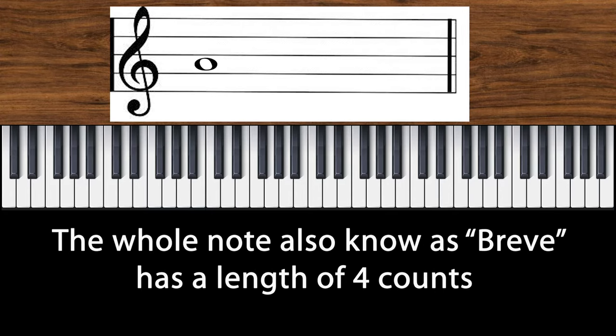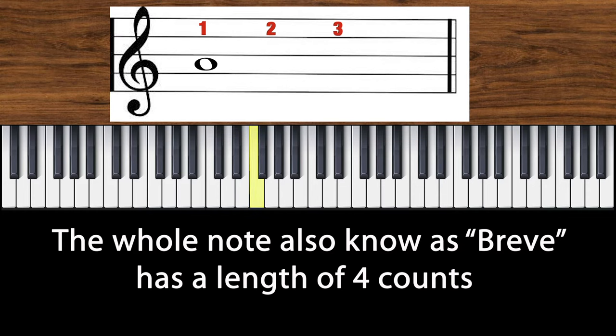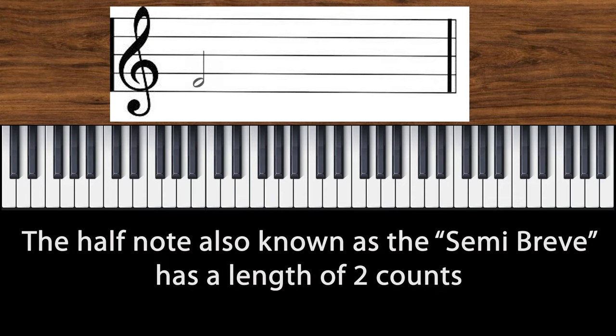The whole note is also known as the breve and has a length of four counts. Let's listen to it again. The half note, also known as the semibreve, has a length of two counts.